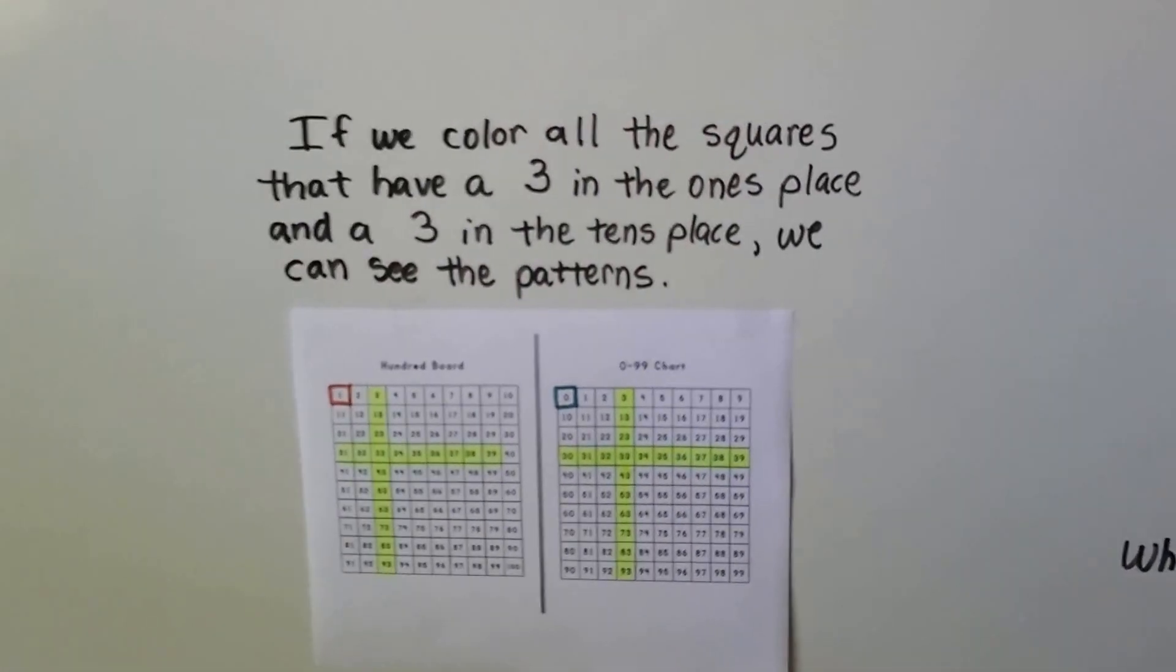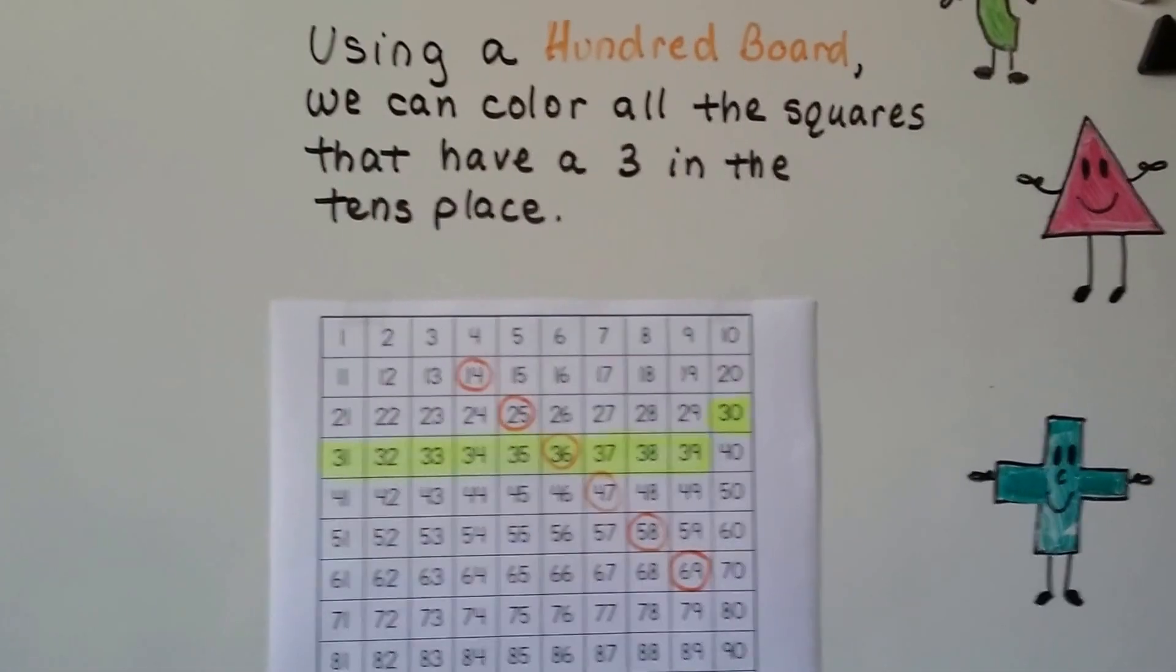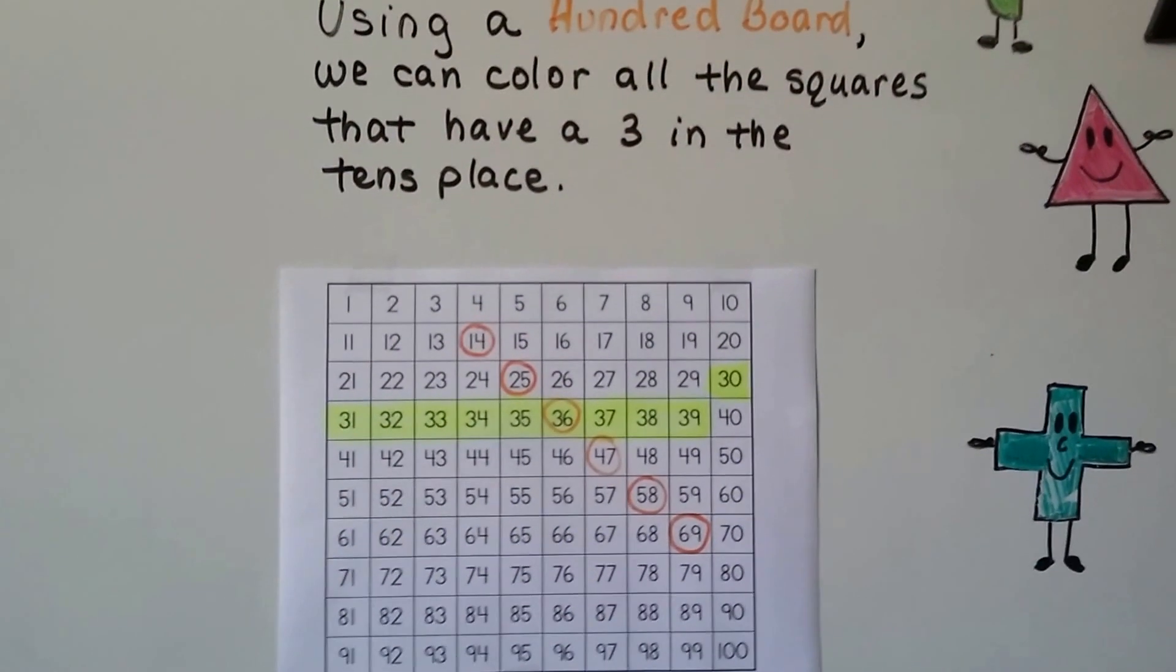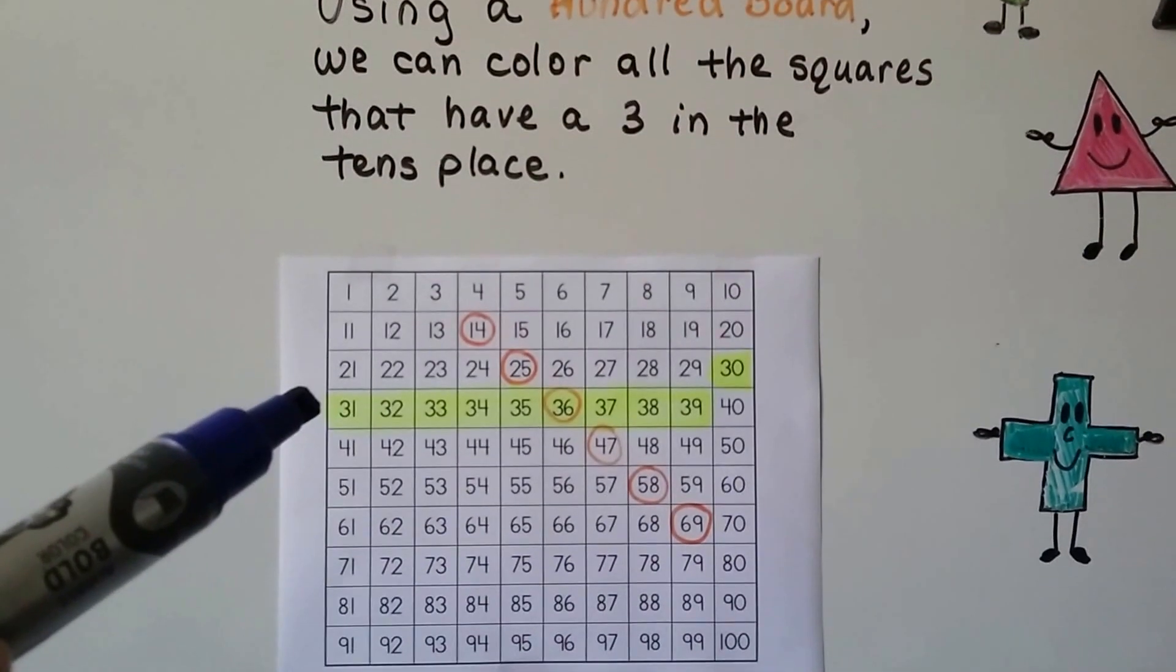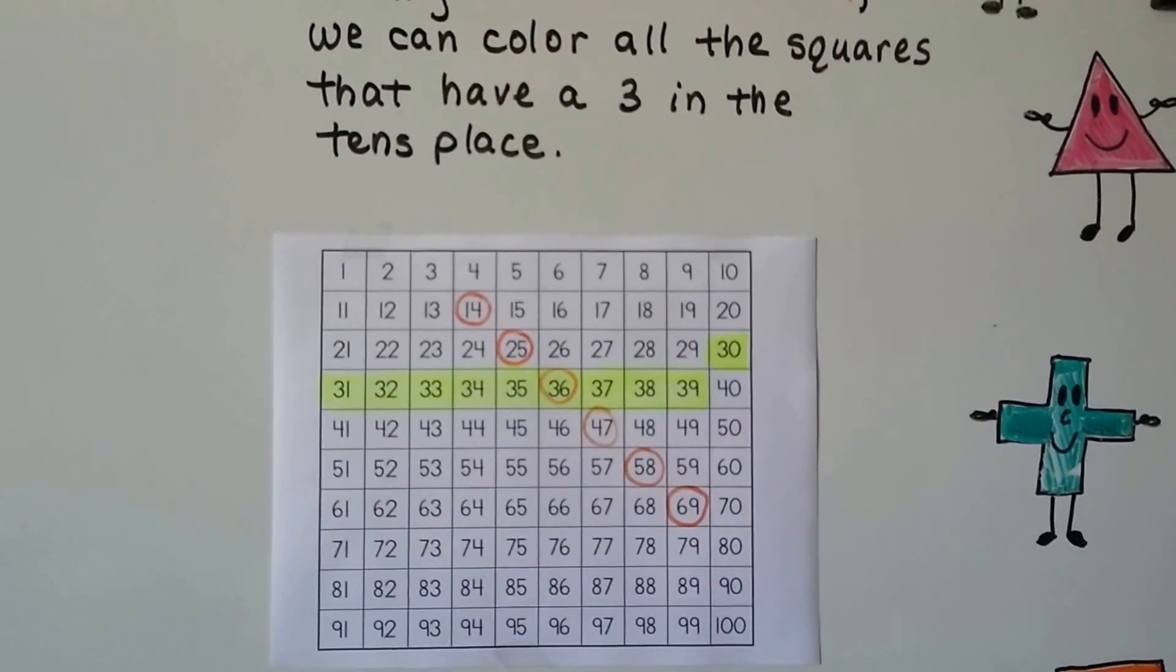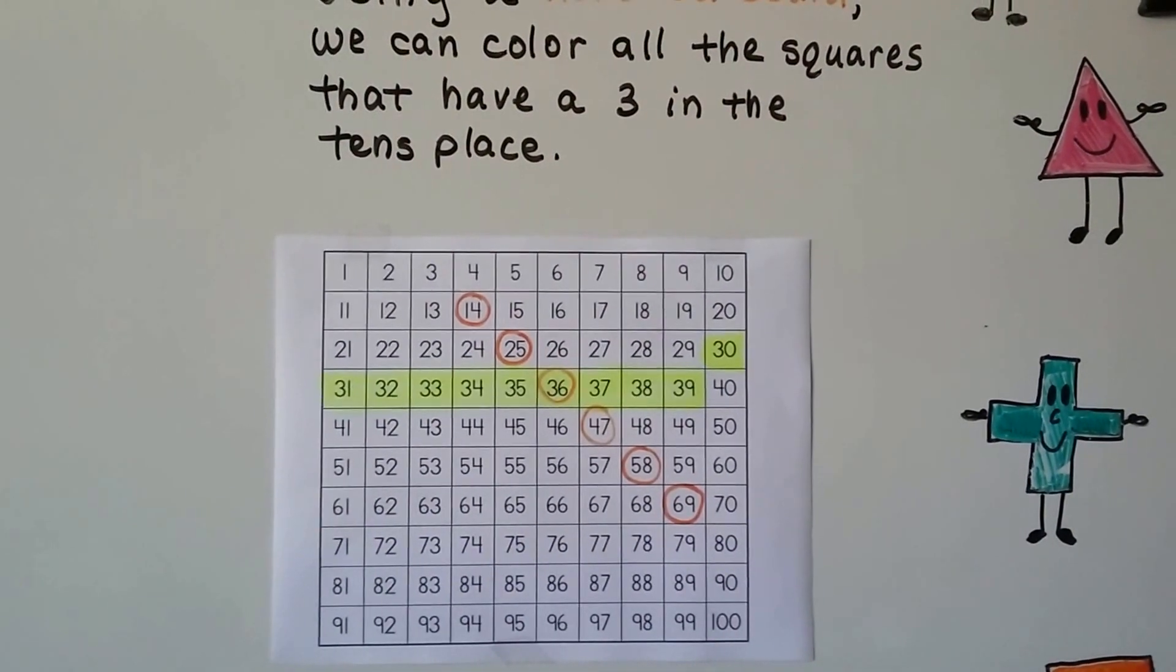So we're going to be using a 100 board that starts with a 1. And using a 100 board, we can color all the squares that have a 3 in the tens place. I colored them all yellow. And that even means I had to do this one up here. That's got a 3 in the tens place. 30.